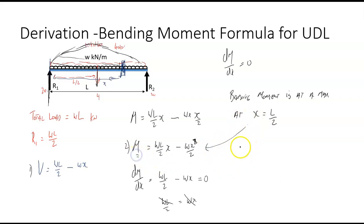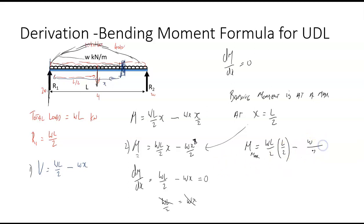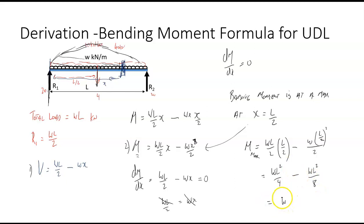Substituting x = L/2 back into the bending moment equation: M = wL/2 · (L/2) minus w(L/2)²/2, which equals wL²/4 minus wL²/8. A quarter minus an eighth is an eighth, so the maximum bending moment is wL²/8. That is a value you can look up in tables.